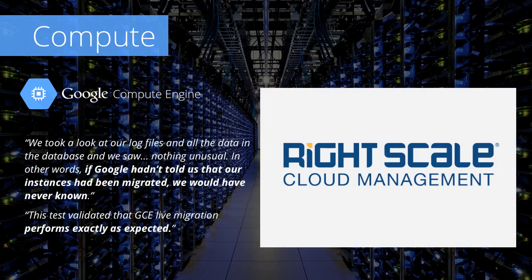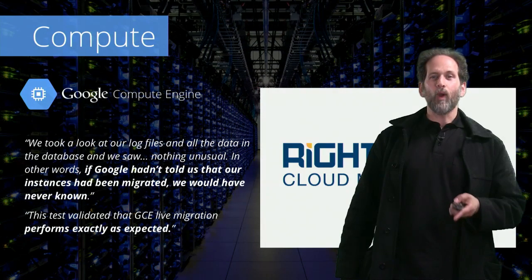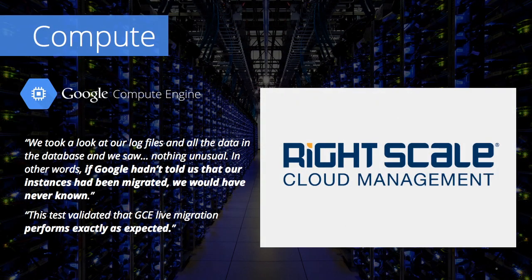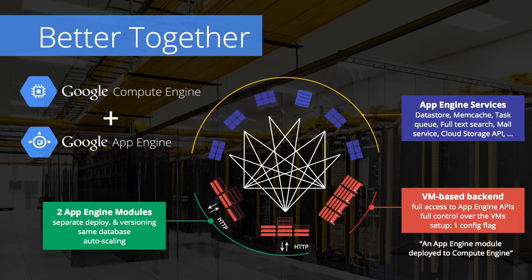We can patch and maintain hosts without any downtime to the running VM. When RightScale tested this, they saw nothing — which means that the feature works as expected. And of course, we can combine these solutions, allowing for App Engine instances to run on Compute Engine's VMs, opening the system up to doing massive compute tasks with the powerful scheduling and dynamic resource allocation features of App Engine — the continuum of computing.